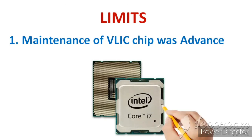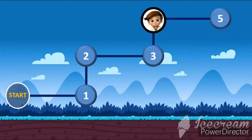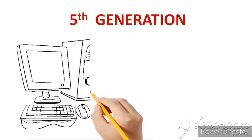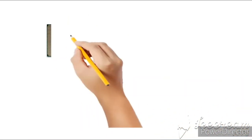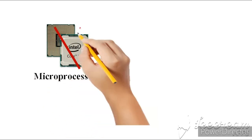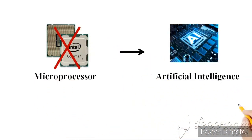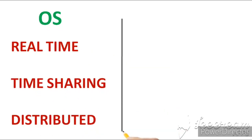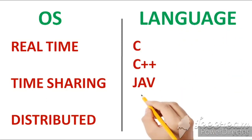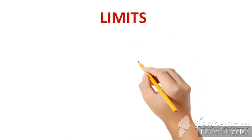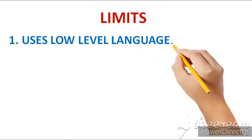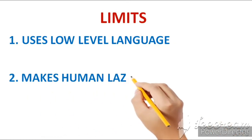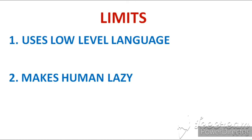Now friends, let's move to the 5th generation. Fifth generation's period of time is 1981 to present — meaning the 5th generation is still ongoing. In this generation, artificial intelligence is used in place of microprocessors, which is also called Ultra Large Scale Integrated circuit. Real time, time sharing, and distributed operating systems are used. Languages such as C, C++, Java, .NET, and Python are famous. Limits: first, uses low-level language — it uses a very low-level type of language. Second, makes humans lazy — these computers are making humans increasingly lazy.